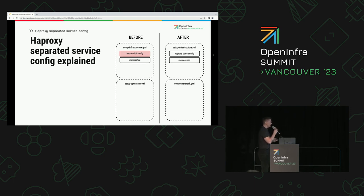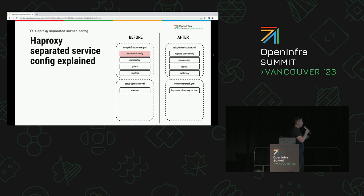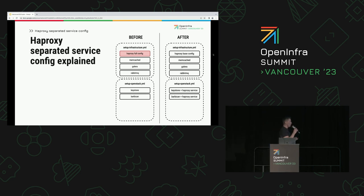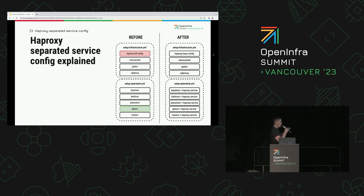Then everything else looks exactly the same — you go through setup infrastructure and reach the setup OpenStack stage. That's another crucial difference: before, we only configured Keystone at this point as an OpenStack service. But now we configure Keystone and its HAProxy service, and we do that for each other OpenStack service as well. This helped us solve both previous challenges: we minimized downtime during TLS backend transition, and because we configure HAProxy services in a different place, we no longer have a problem with variable scope.